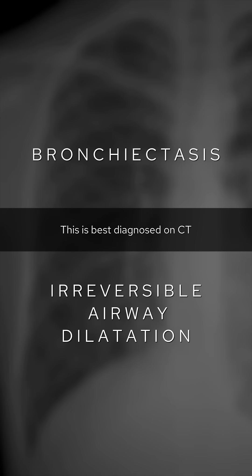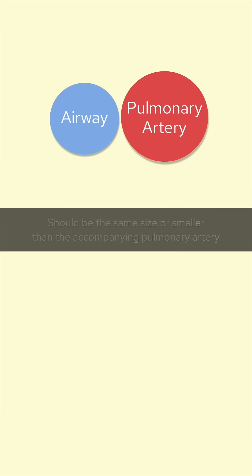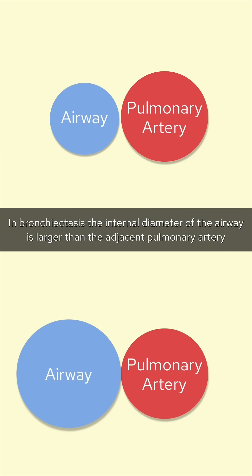This is best diagnosed on CT. In normal circumstances the internal diameter of the airway should be the same size or smaller than the accompanying pulmonary artery. In bronchiectasis the internal diameter of the airway is larger than the adjacent pulmonary artery.